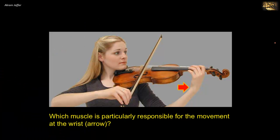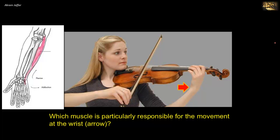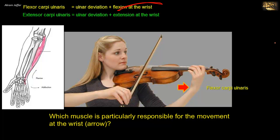Which muscle is particularly responsible for the movement at the wrist indicated by the arrow? This is a movement of flexion and ulnar deviation (adduction) of the wrist. The only muscle that can perform this combination is flexor carpi ulnaris. Pure ulnar deviation is produced by flexor and extensor carpi ulnaris together, where extension cancels out flexion and only ulnar deviation remains. But here we have flexion as well as ulnar deviation, so the muscle is flexor carpi ulnaris.